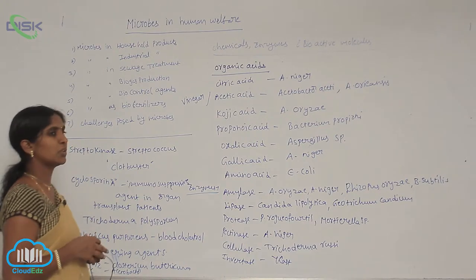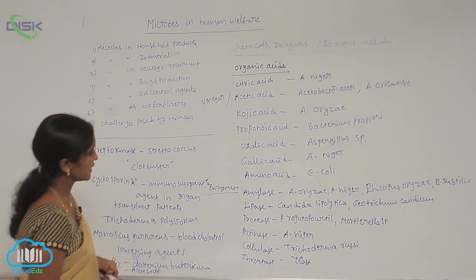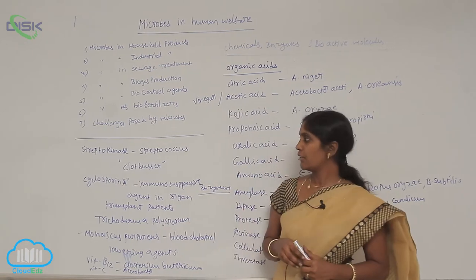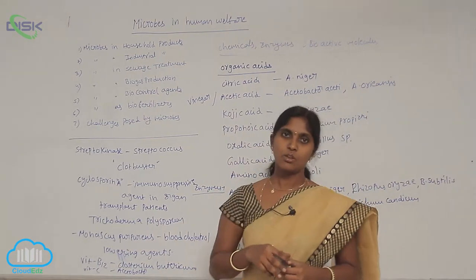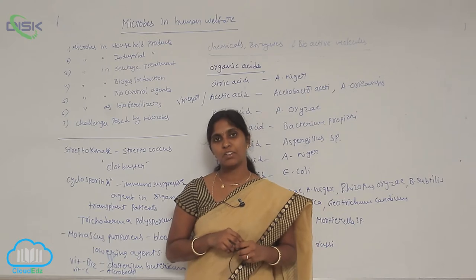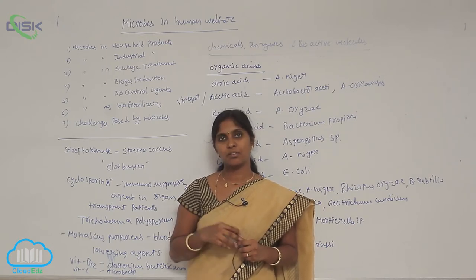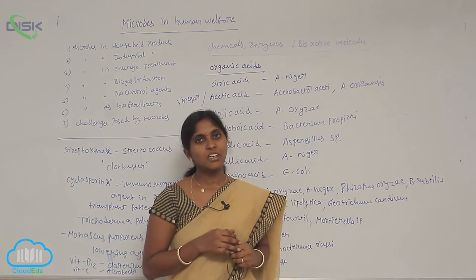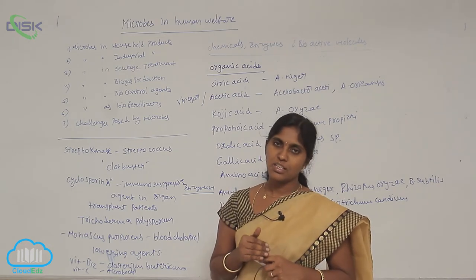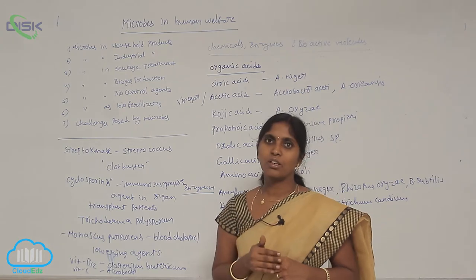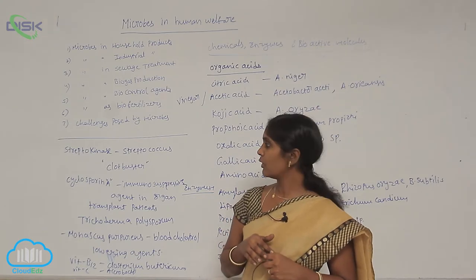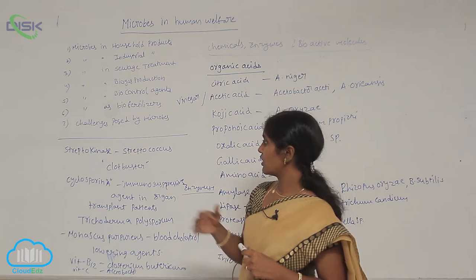Streptokinase is an enzyme extracted from Streptococcus and has medicinal importance. Nowadays it is used as a clot buster. Cholesterol fills the arteries of blood vessels, blocking blood flow. Streptokinase dissolves blood clots in the vessels, which is why it is called a clot buster. It is artificially prepared using Streptococcus.